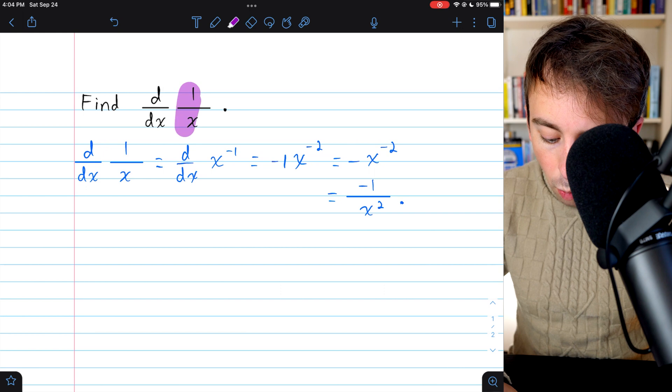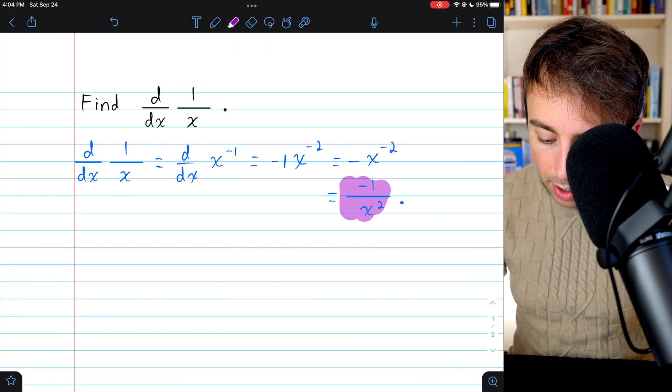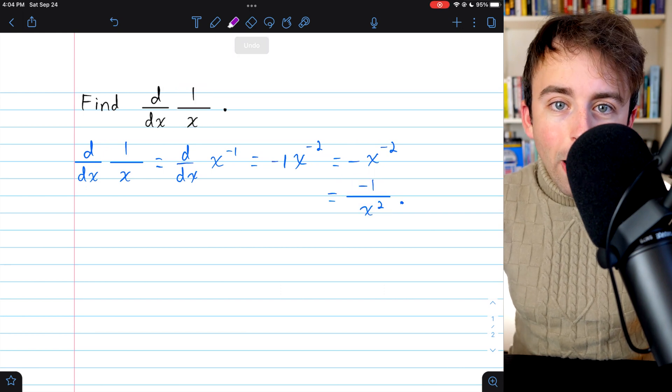That's the derivative of 1 over x, negative 1 over x squared.